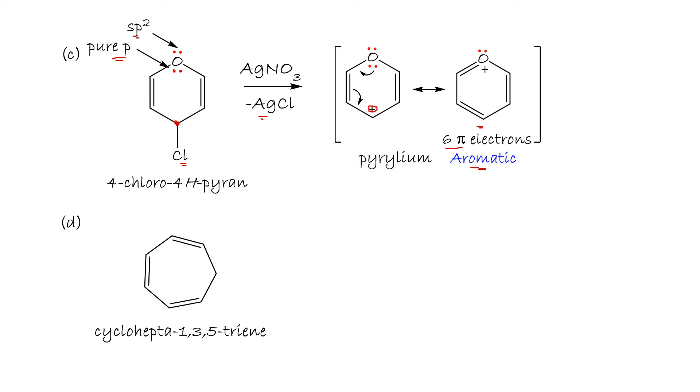Cyclohepta-1,3,5-triene. We have a seven-membered ring which is conjugated with six pi electrons. We need this carbon to have a pure p orbital that's empty. To do that, we react with a very strong hydride acceptor, trityl fluoroborate, to form tropylium ion. Again, six pi electrons—aromatic.